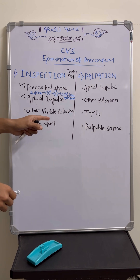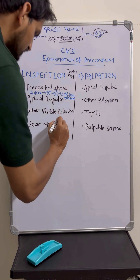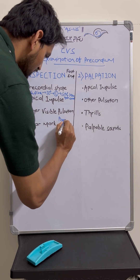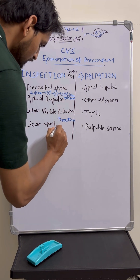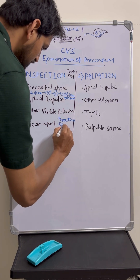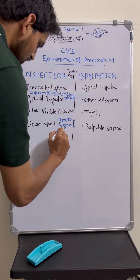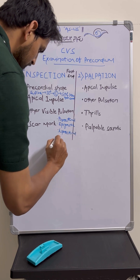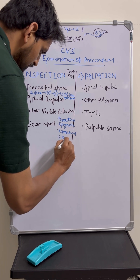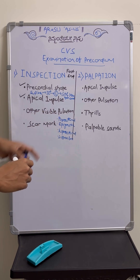Then you have to visualize for other visible pulsations. Other visible pulsations at the precordium mainly include parasternal pulsations — left and right — then epigastric, then suprasternal, and supraclavicular pulsations. Just observe for these visible pulsations at the precordium.